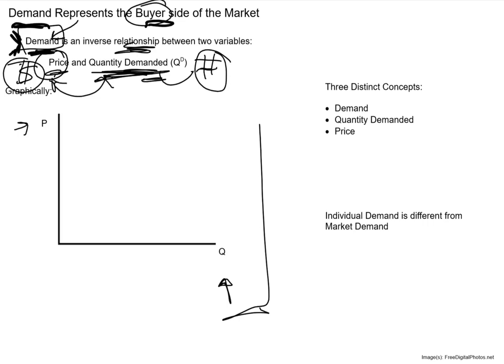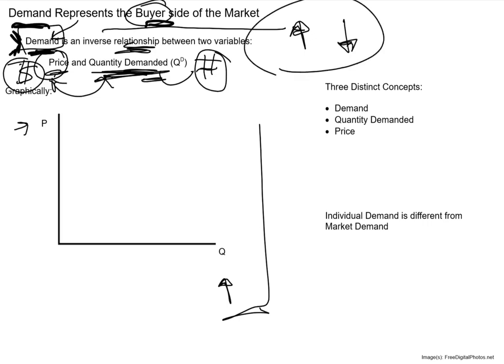Demand, then, represents the relationship between those two variables — and it's an inverse relationship. If something has an inverse relationship, those two variables move in opposite directions: if one is increasing, the other is decreasing. A line showing an inverse relationship is quite simply a downward sloping line. This downward sloping line, labeled D, is the demand for a product.